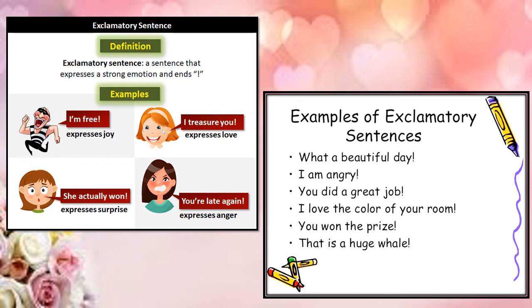Now let's discuss exclamatory sentence and exclamation point. The exclamation point expresses strong emotions of joy, love, surprise, anger, excitement, and many other emotions. So, with this type of sentence — when we express strong feelings and emotions — we use exclamation point, that is exclamation mark, at the end of that sentence.